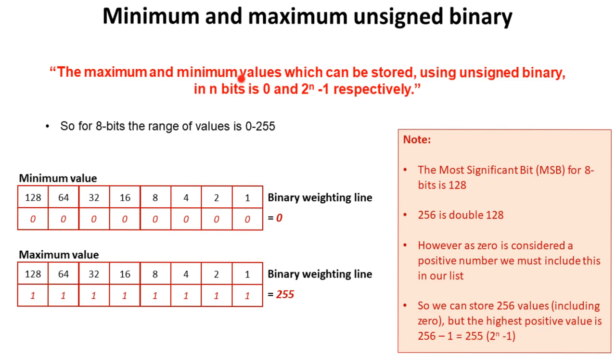So we can see that the maximum and minimum values which can be stored using unsigned binary in n bits is 0 and 2^n minus 1.